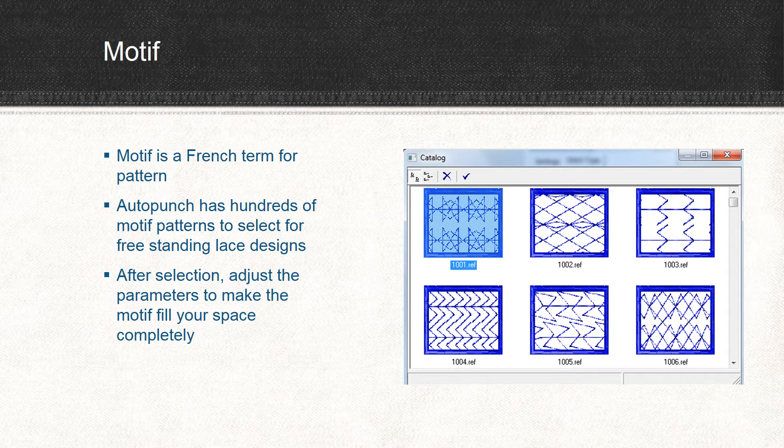Motif is a French word for pattern. Auto Punch has hundreds of motif patterns to select from, especially when creating freestanding lace designs. To the right, you can see the catalog for motifs. After making your selection, adjust the parameters so the motif fills the entire space completely — you may have to tweak it several times until you're satisfied with the result.